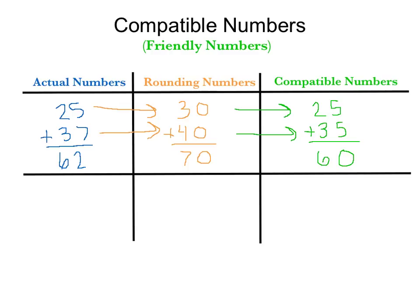And you can see 60 is pretty close to the actual number of 62. And then if you would have used 40 for that compatible number, you would have been at 65, which is still pretty close. It's still really close, and really closer than 70, either way. Absolutely.